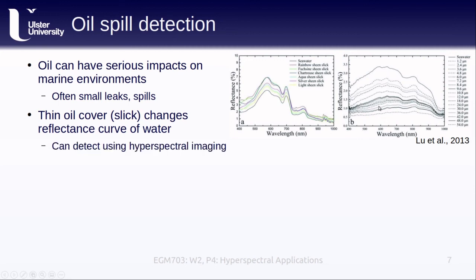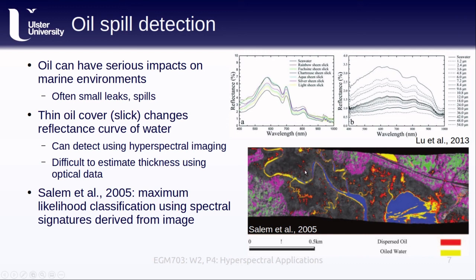While it can be difficult to measure the thickness of the slick using optical data alone, detecting the presence of oil using hyperspectral images is a much easier problem to solve. This image, from a 2005 study by Salam and others, shows the distribution of oiled water in a watershed in Maryland in the US, identified using a hyperspectral image and maximum likelihood classification. The thing to remember here is that even though we see a huge area affected by the oil, these are not the result of large catastrophic spills, but instead show how prevalent oil can be as a result of these small leaks or small spills.